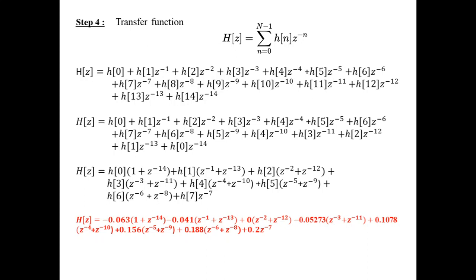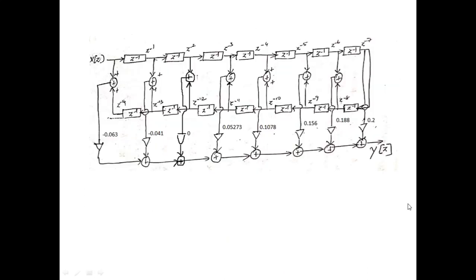Moving on to the next step, we need to identify the transfer function of the filter since our ultimate aim is to develop a filter structure. H(z) = Σ(n=0 to N−1) h(n) · z^(−n). Expanding for different values and exploiting the symmetry property — replacing h(14) with h(0), h(13) with h(1), h(12) with h(2), and so on — and collecting common terms, we obtain the final equation for H(z).